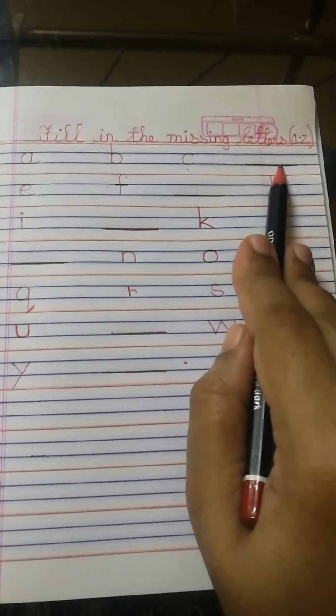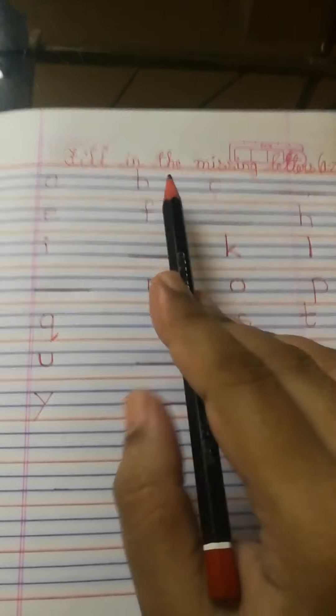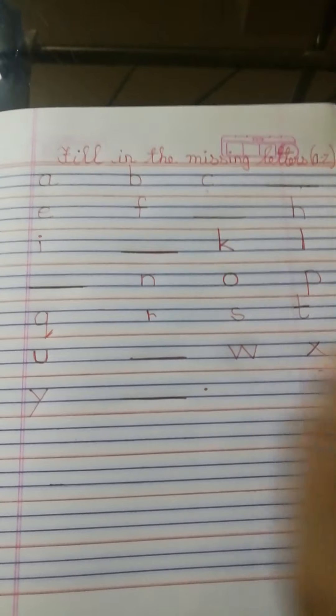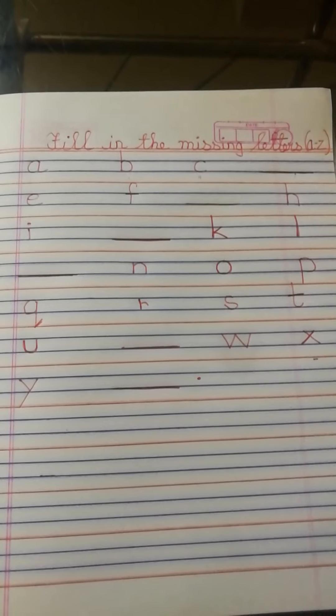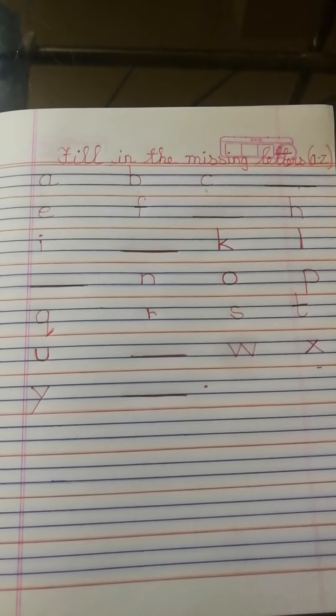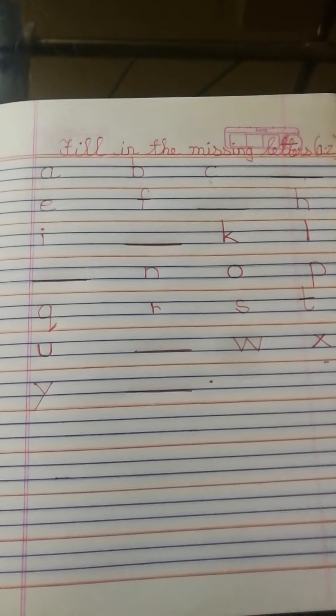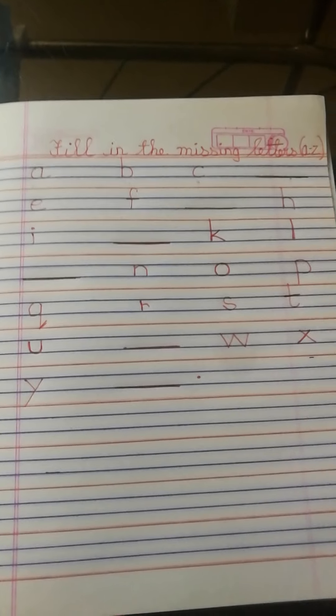There is a dash, so which letter is missing after small c? Yes — it is small d. So you have to write small d within the line.